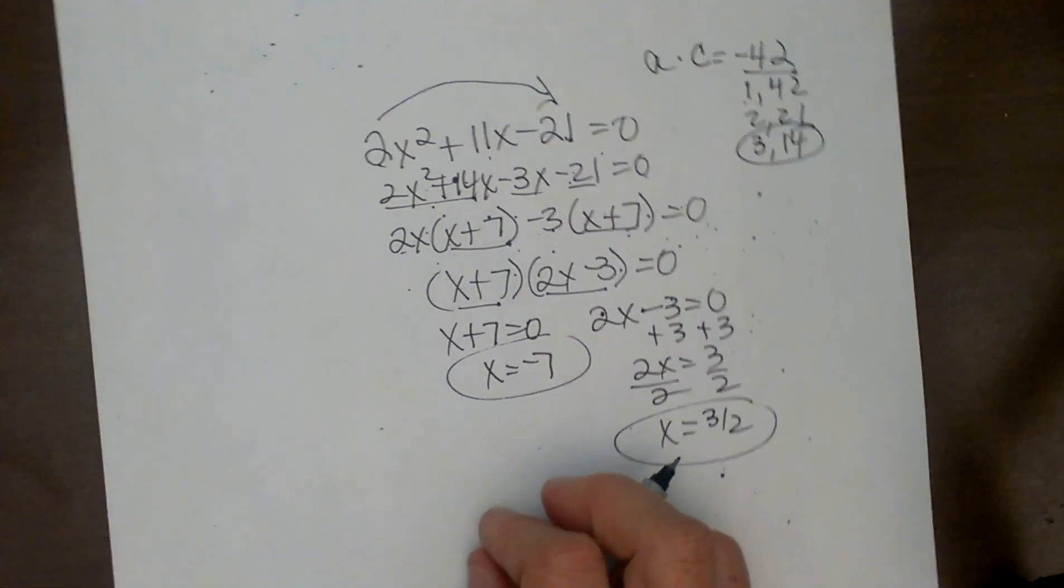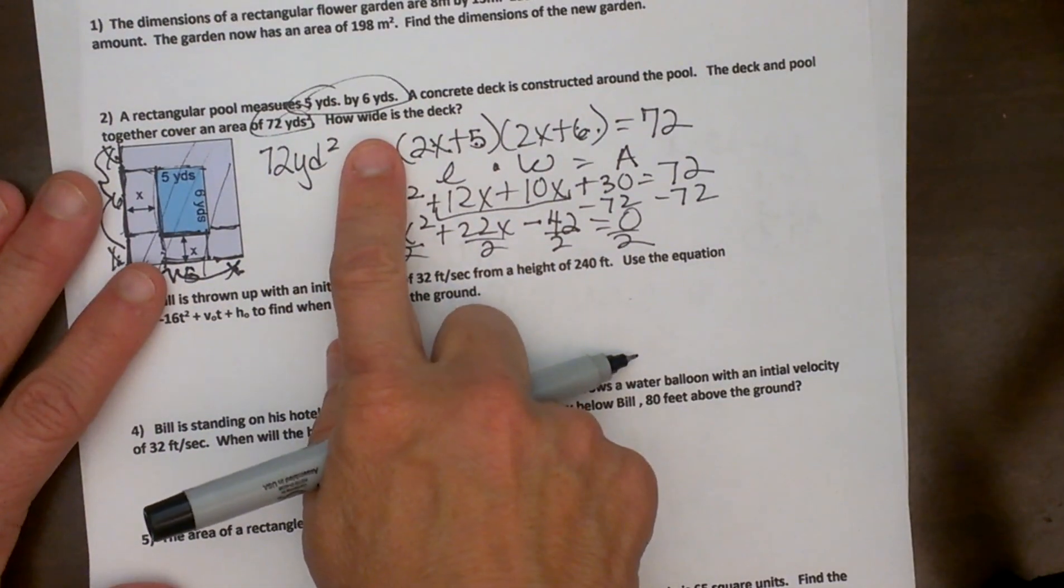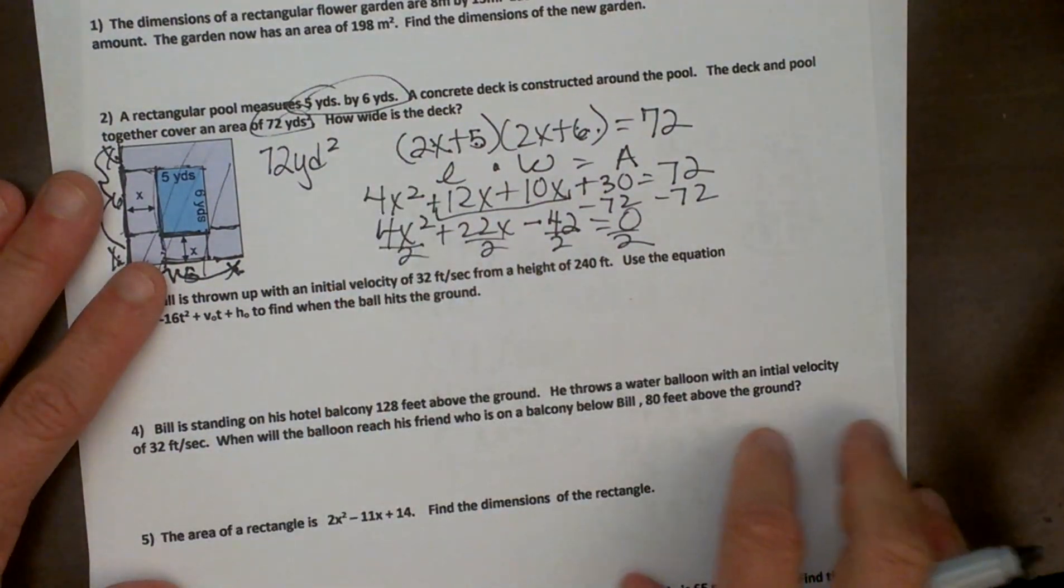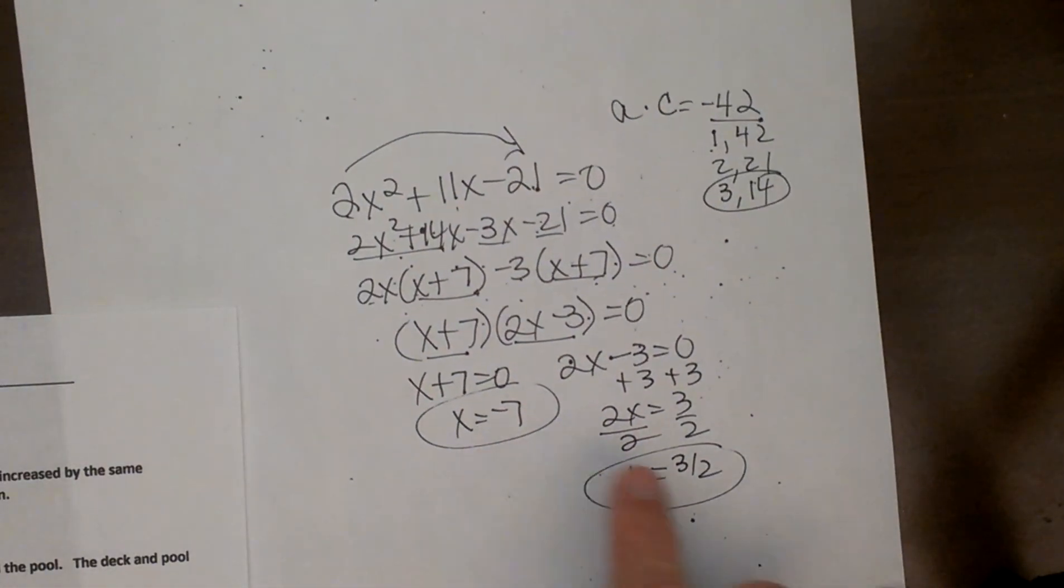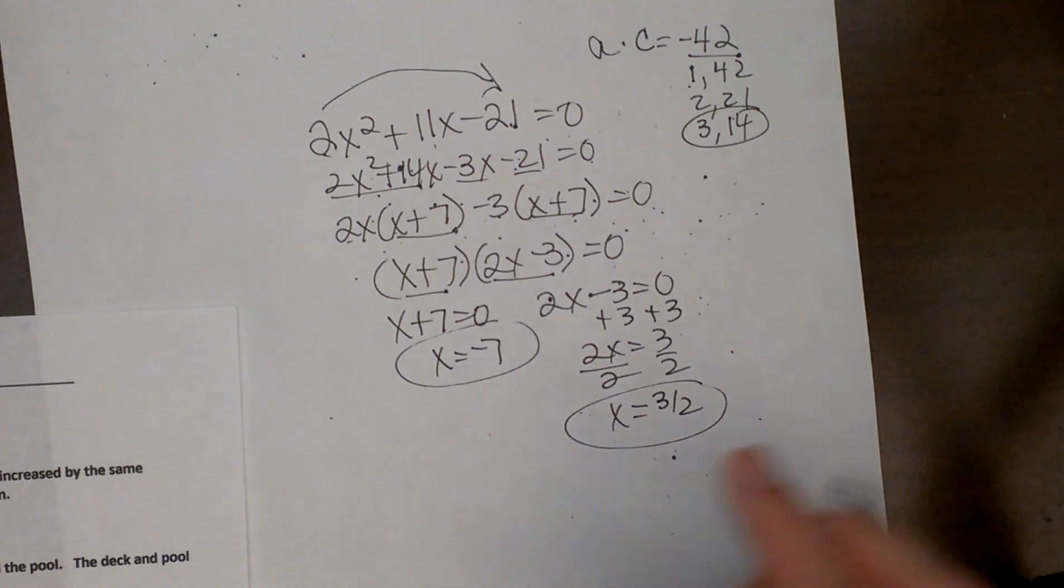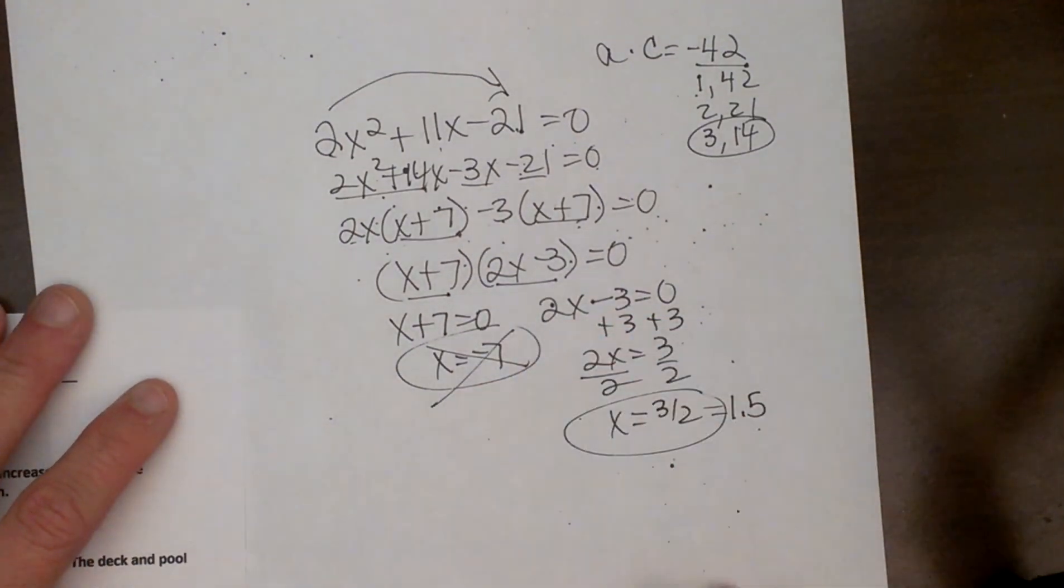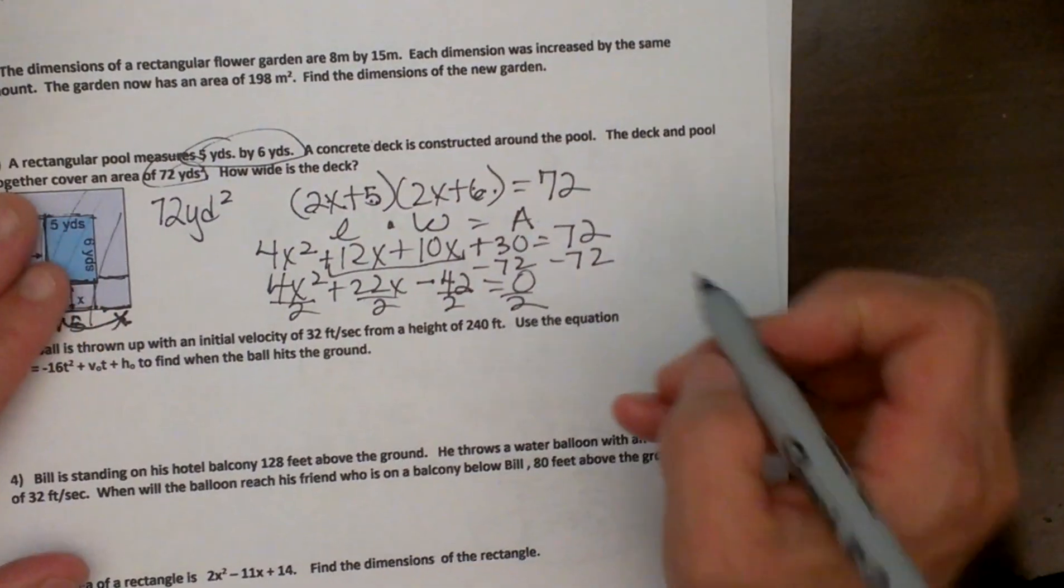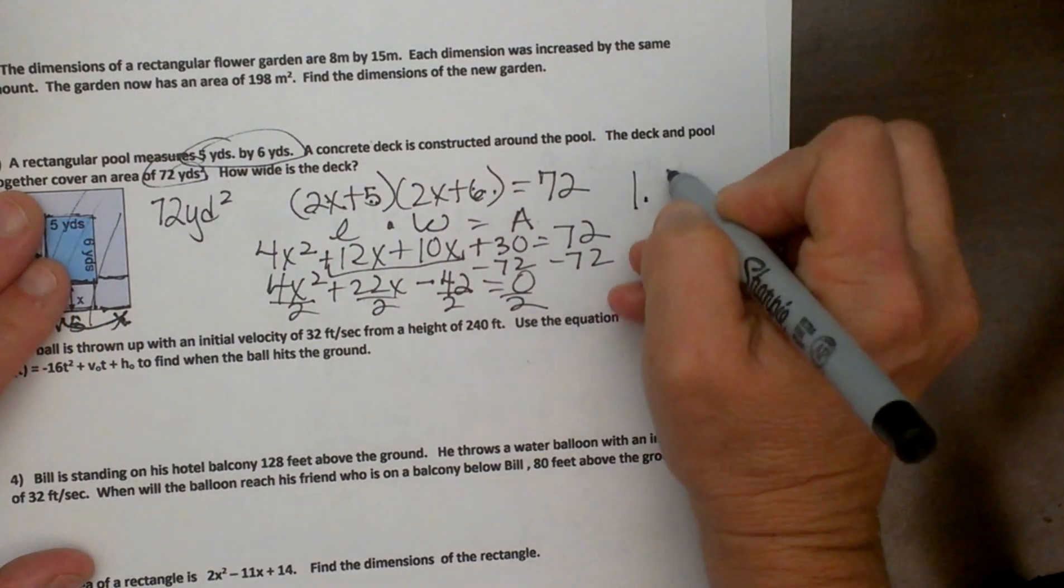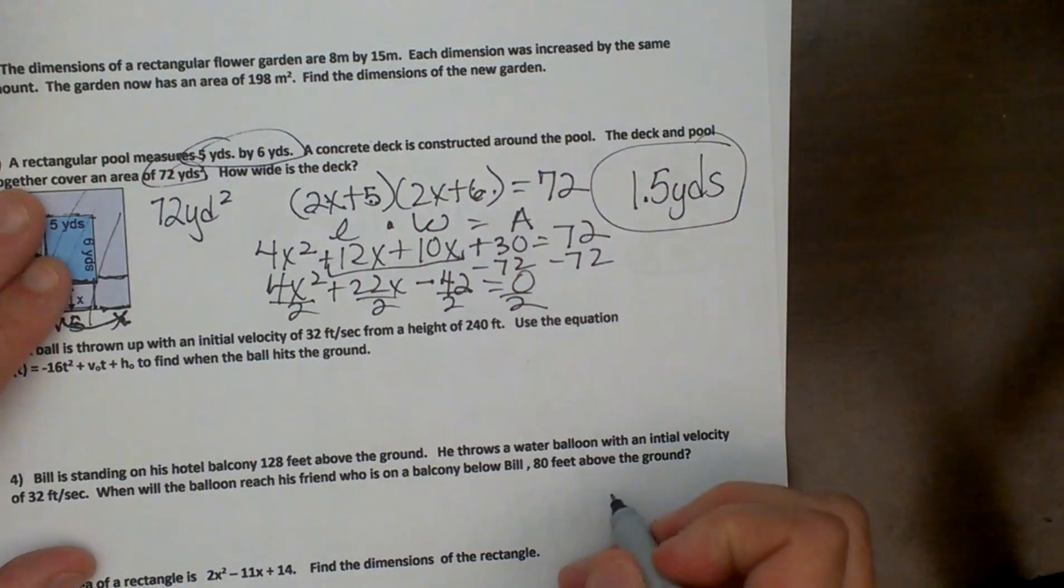Now let's go back and apply it to the word problem. Okay, how wide is the deck? How wide is the deck? Well, is the deck negative seven yards or is the deck three halves or one and a half? Well it can't be a negative so I have to throw that one out because you can't have a negative length so it must be a foot and a half or actually in this case a yard and a half. So the answer is 1.5 yards and that is how wide the deck is.